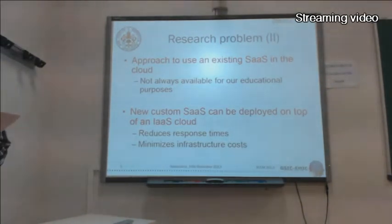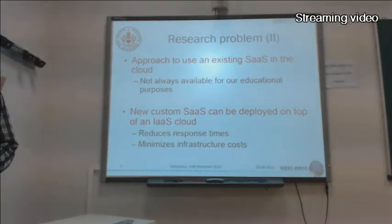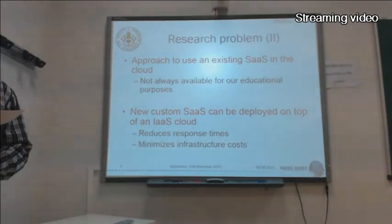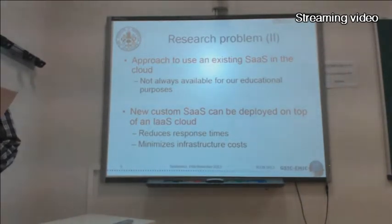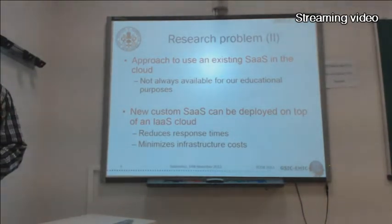However, we can deploy our own custom SaaS on top of an IaaS cloud — Infrastructure as a Service. Similar to the approaches followed by Amazon, Facebook, or Twitter, who run their services on top of Amazon EC2. This way, we can reduce response times by acquiring as many resources as needed, while only paying for the infrastructure used. Costs are reduced thanks to the pay-per-use billing model.